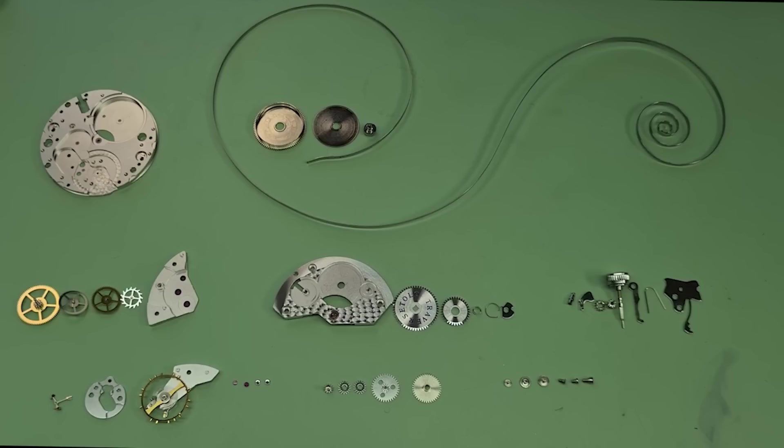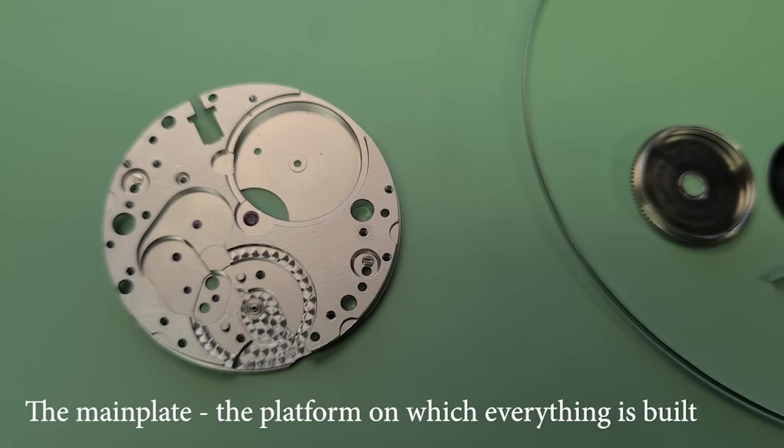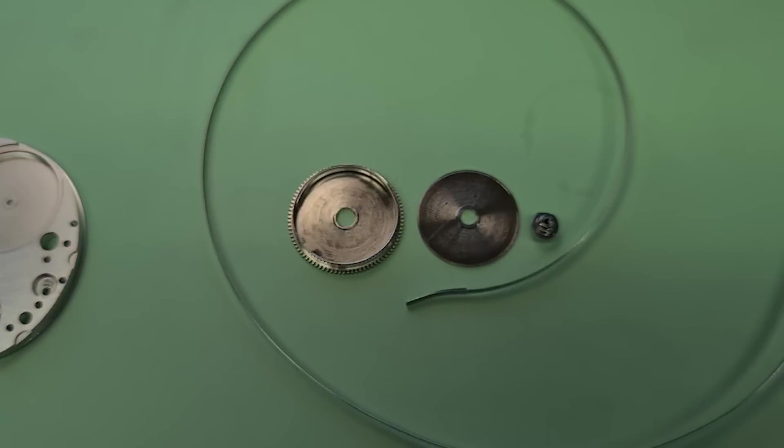First of all, we need a platform to put all these different parts on, and that is what's called a main plate. On the main plate, you can see there's a lot of cutouts for different parts, and those tiny red circles are rubies, synthetic, so not very valuable, but still rubies.